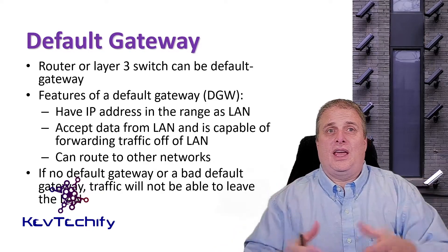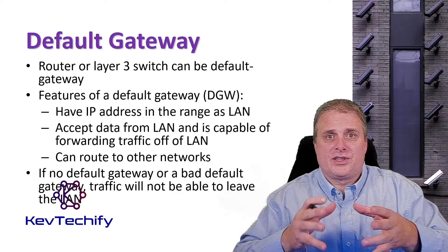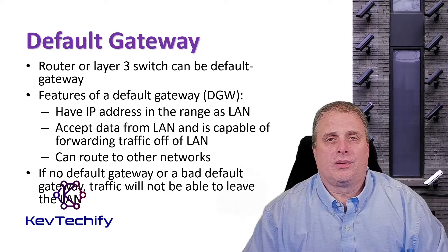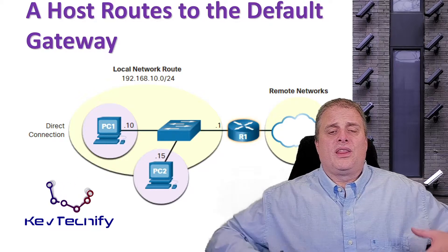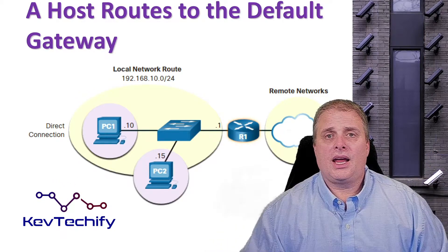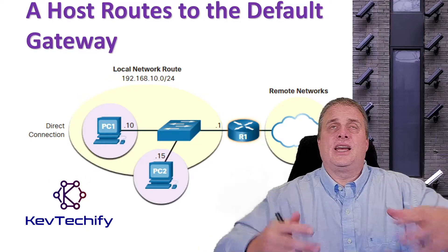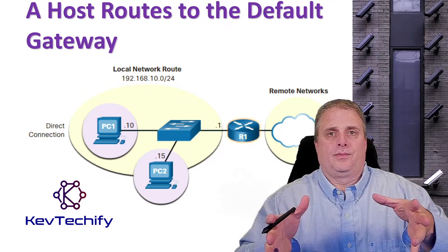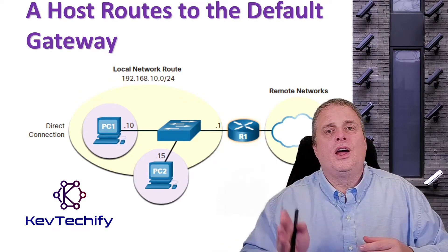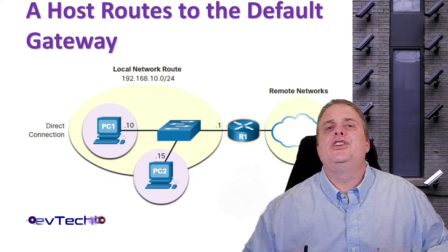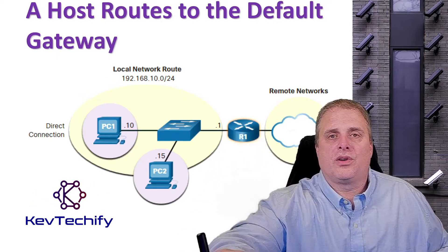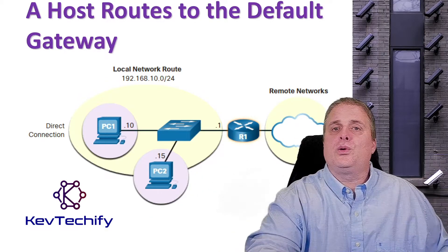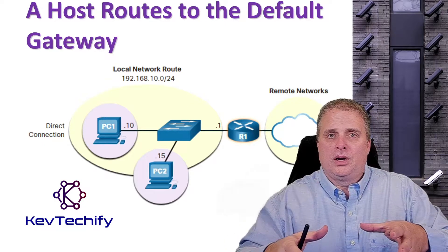If no default gateway is available, or if it's misconfigured or you typed in the wrong address, no traffic will be able to leave your network. Think of the default gateway as the exit off of your network. Another way to visualize it: if you're in a room, to get out of that room you have to go through a door — that door is your default gateway. That door leads you to a network of hallways and other rooms, and to get to those different networks, you have to go through that door first.